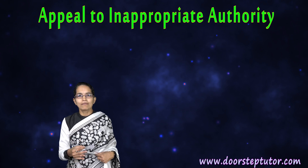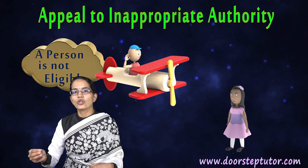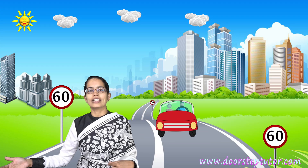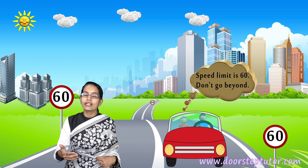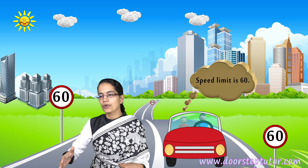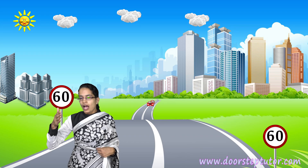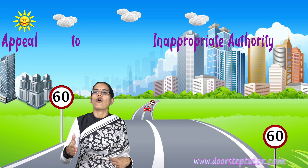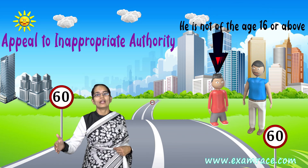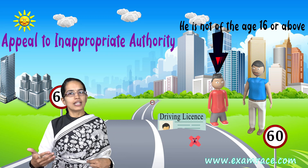The next is the appeal to an inappropriate authority. That means the person is not eligible or not authoritative for the work he is trying to tell you. He may be saying something that is correct, but there is an inappropriate authority — because he is not of the age of 16 and above, or does not even have a license for the same.